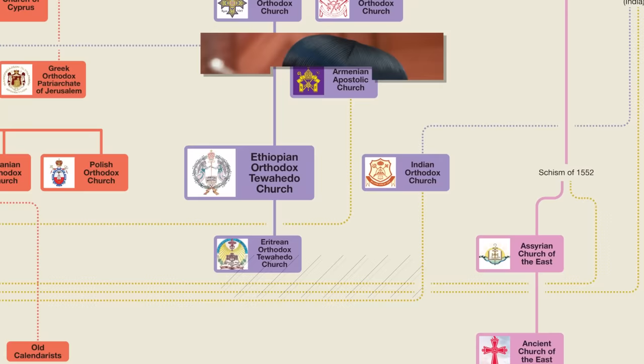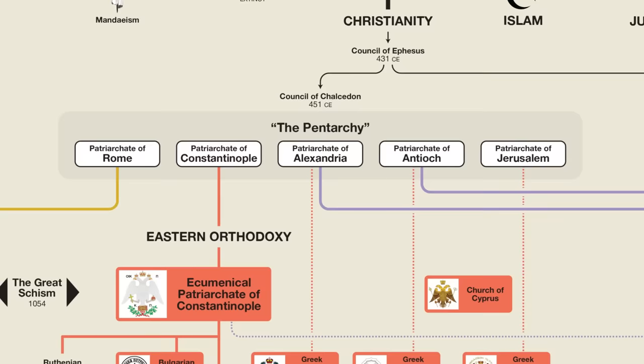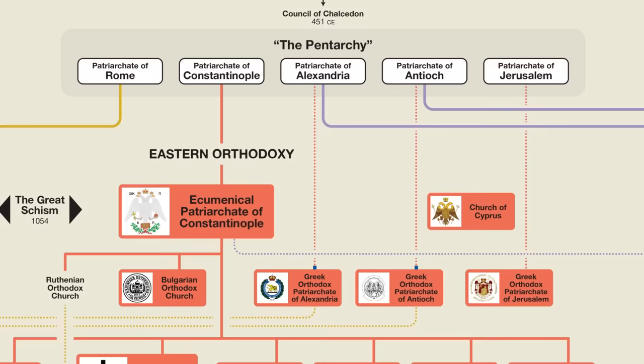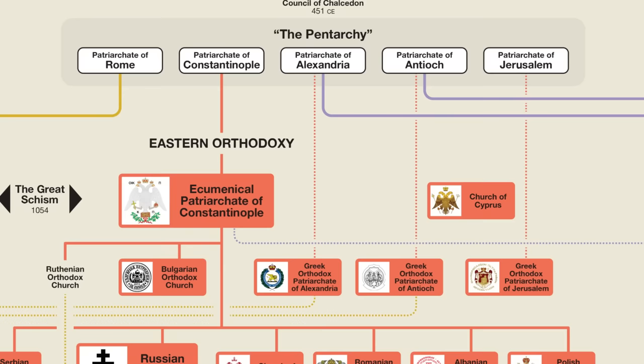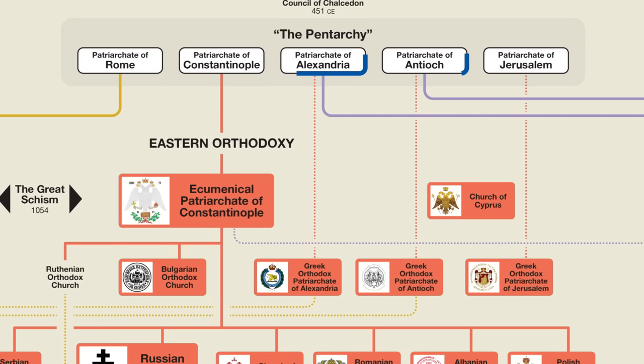This is Patriarch Abun Mathias, the spiritual leader of around 40 million Ethiopian Christians. So let's now return to the Pentarchy. Although most of the Christians in Alexandria and Antioch became Oriental Orthodox, a minority did not. That's why I also show dotted lines that stay within the Eastern Orthodox section. The Christians in these areas that sided with Eastern Orthodoxy were originally known as Melkites, meaning 'imperial.' That term will pop up again later, so I thought I'd point out its meaning now.